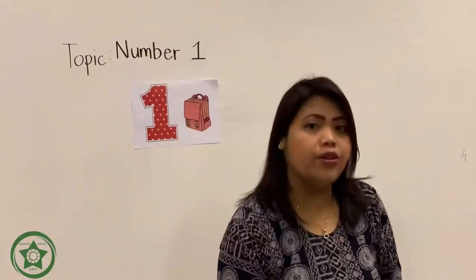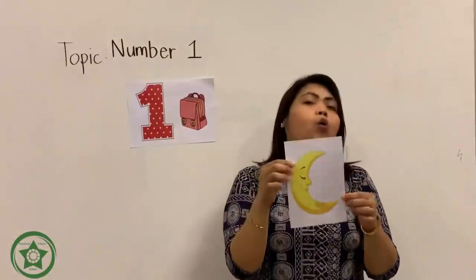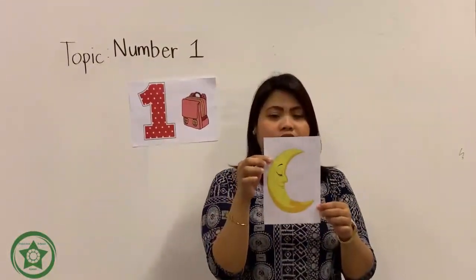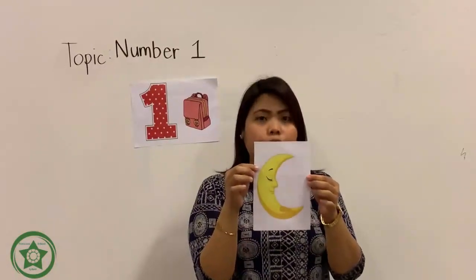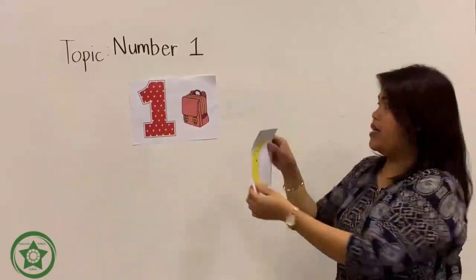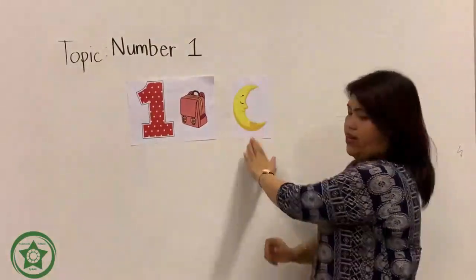I have also another picture here. Everybody look at here. What is this? Very good. It is a moon. How many moon? One. Very good. Everybody say one moon. Very good.